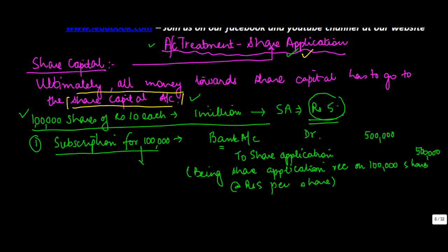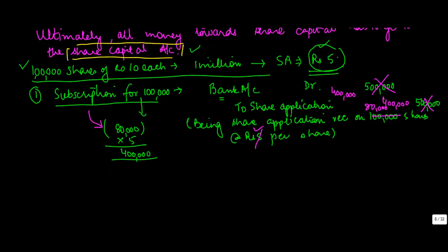Now what if instead of 100,000 you got only 80,000. So on 80,000 shares you got only 5 rupees a share which is 400,000. So in this case, what you will do is that instead of 500,000, you put in 400,000 here, you put in 400,000 here. Here you put in 80,000. So if the subscription is for less number of shares, you just work it out like this.